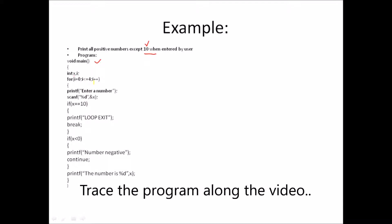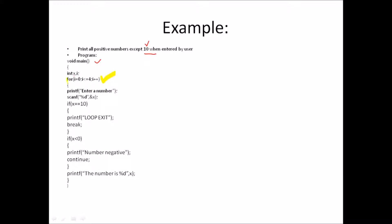The for loop is: i equal to 0, i less than or equal to 4, i++. In the same way, we start a for loop. Inside the loop, we scan the variable x — we scan the value into x.